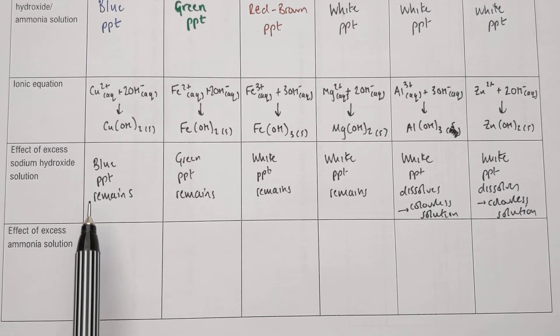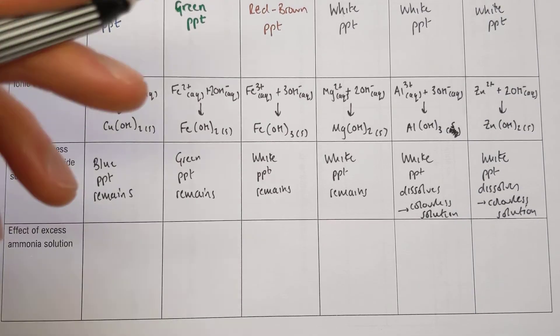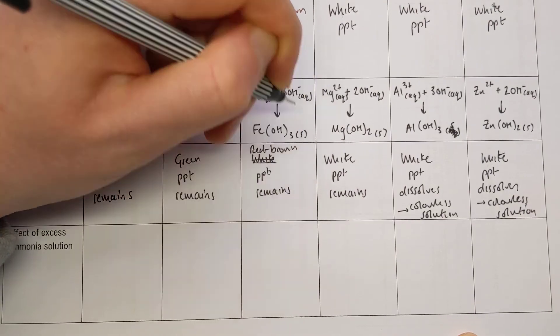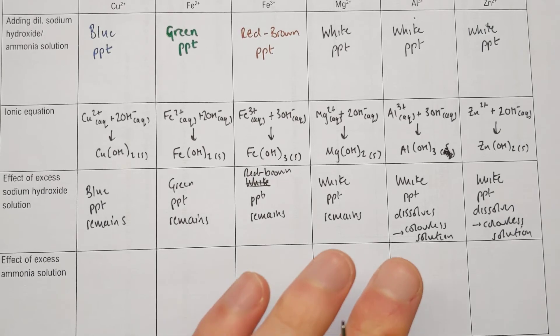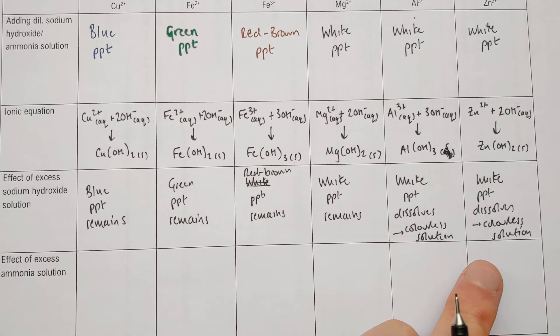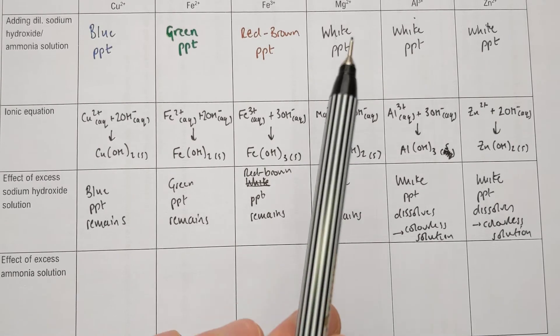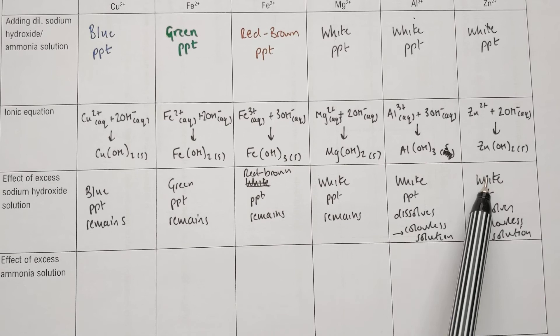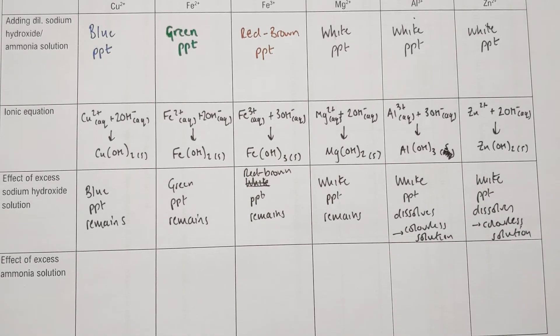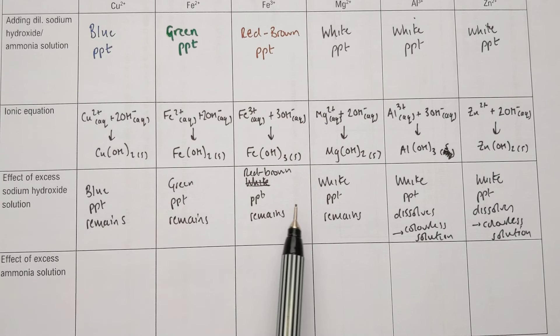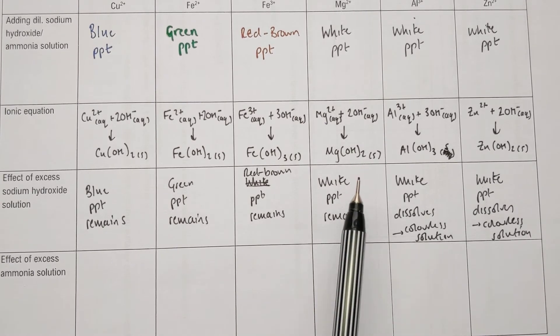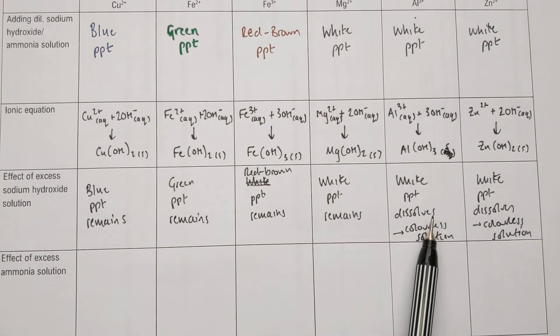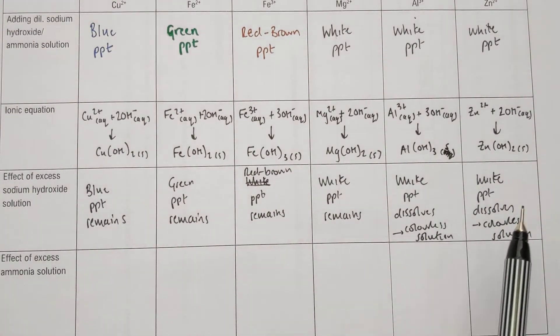Here are the results if we add extra sodium hydroxide. With our three colorful ones, nothing too interesting happens. The blue precipitate remains with copper, green precipitate remains with iron 2+, red-brown precipitate remains with the iron 3+. We have got something interesting here with our three white precipitates. The magnesium precipitate, magnesium hydroxide, doesn't do anything with extra sodium hydroxide. However, both the aluminum and the zinc precipitates dissolve again. They'll dissolve to form colorless solutions. So I still can't tell apart aluminum and zinc, but I could now tell if I had a magnesium precipitate because that would remain with extra sodium hydroxide.